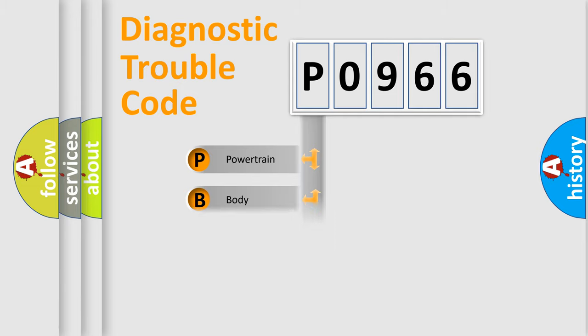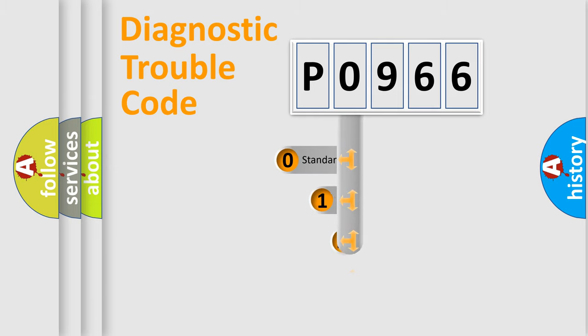Powertrain, body, chassis, network. This distribution is defined in the first character code.